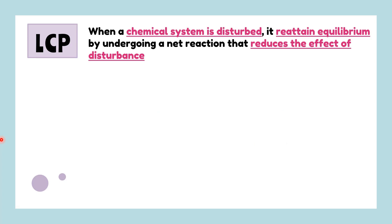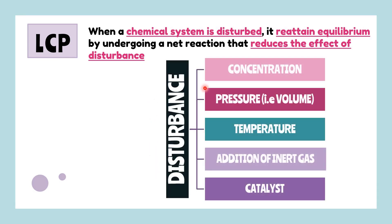Le Chatelier's Principle says if a system at equilibrium is disturbed by means you induce a stress, the system will re-attain the equilibrium so as to relieve that stress by shifting to the side that could reduce the effect of disturbance. We're going to discuss all five types of disturbances that could possibly disrupt the equilibrium of a system.